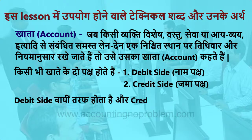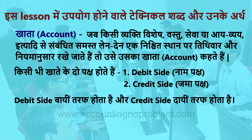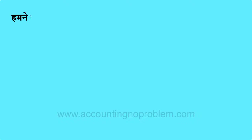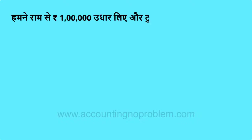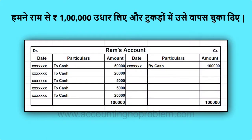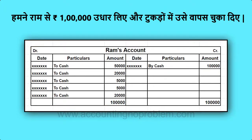Debit Side बाईं तरफ होती है और Credit Side दाईं तरफ होती है। उदाहरण के लिए RAM से 10,000 रुपए संबंधित entry में — जब RAM से 10,000 रुपए लेते हैं तो Credit Side में लिखते हैं, और जब RAM को 1,00,000 रुपए वापस करते हैं तो Debit Side में लिखते हैं। इस वीडियो में हमने Double Entry System और कुछ महत्वपूर्ण परिभाषाएं समझीं। अगली वीडियो में हम बताएंगे कि accounts कितने प्रकार के होते हैं।